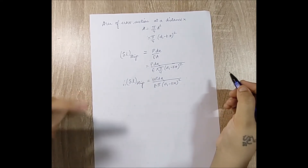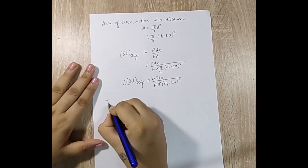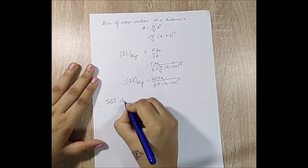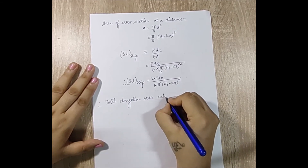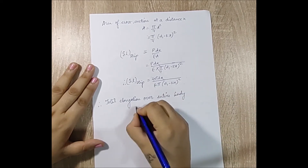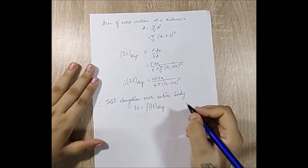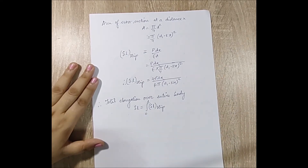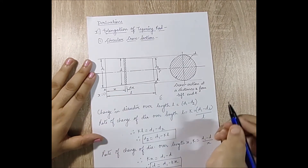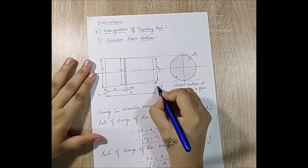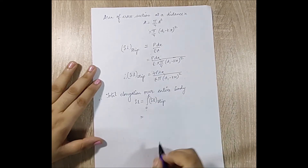Once I calculate the elongation for a strip, the total elongation over the entire tapered body is found by integrating δl_strip over all strips from 0 to L. At end A the value of x is 0, and at end B the value of x is L.